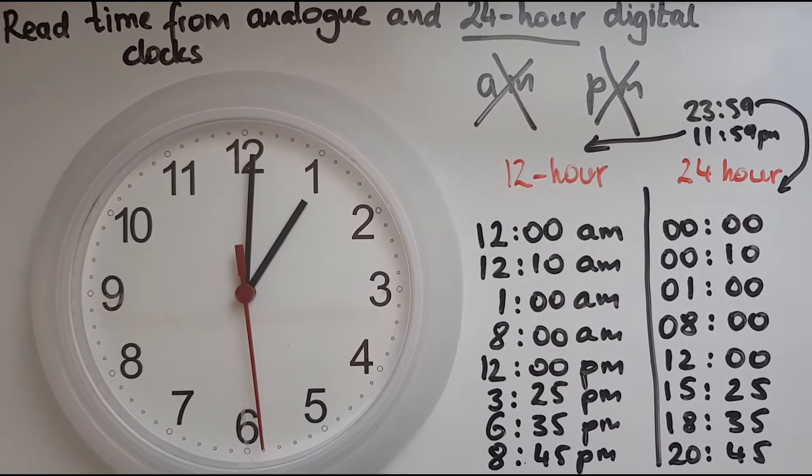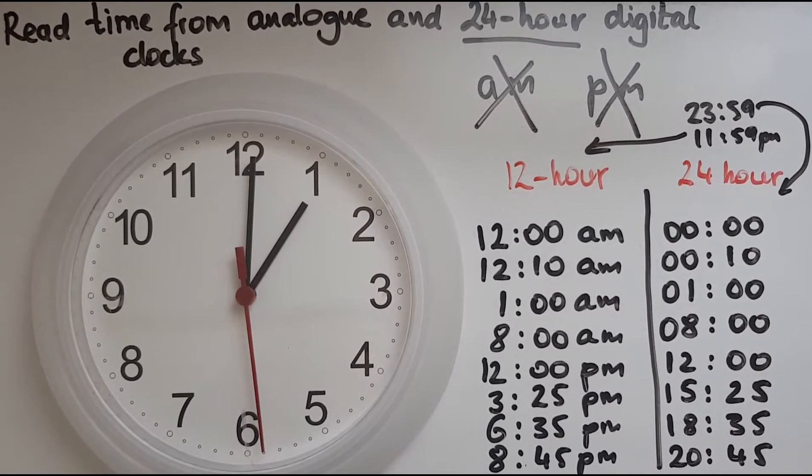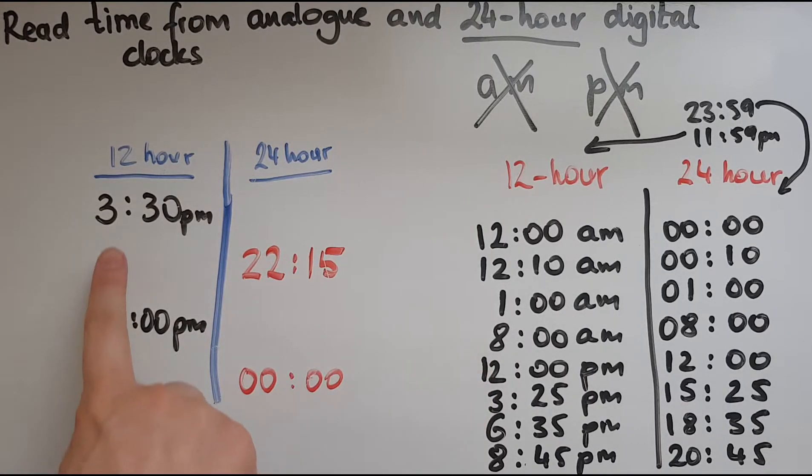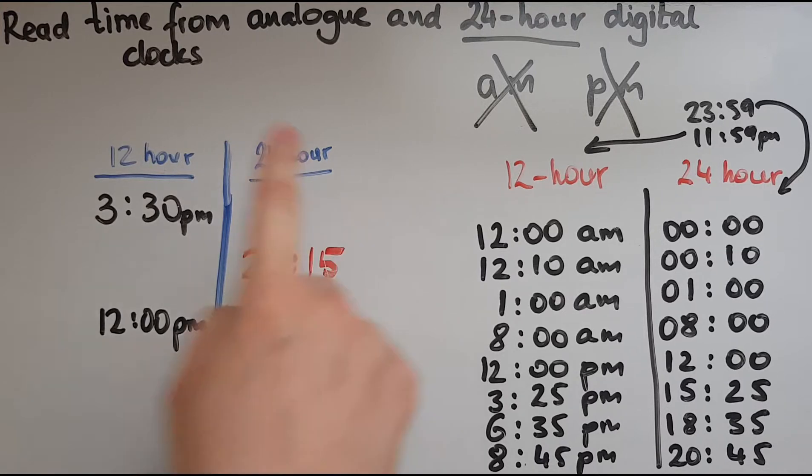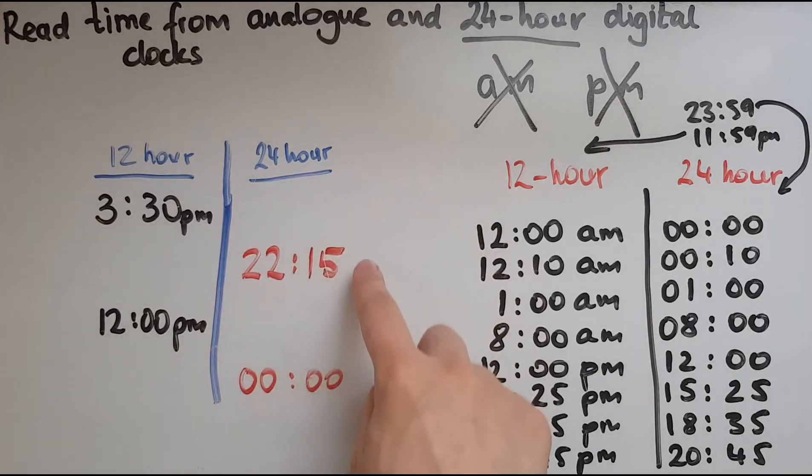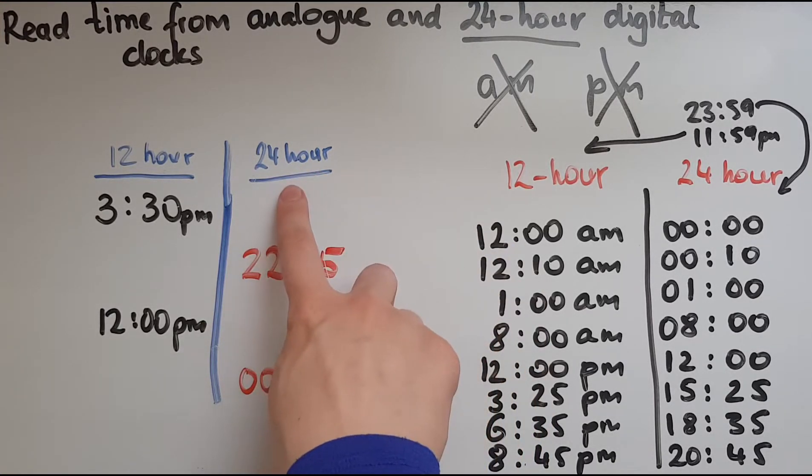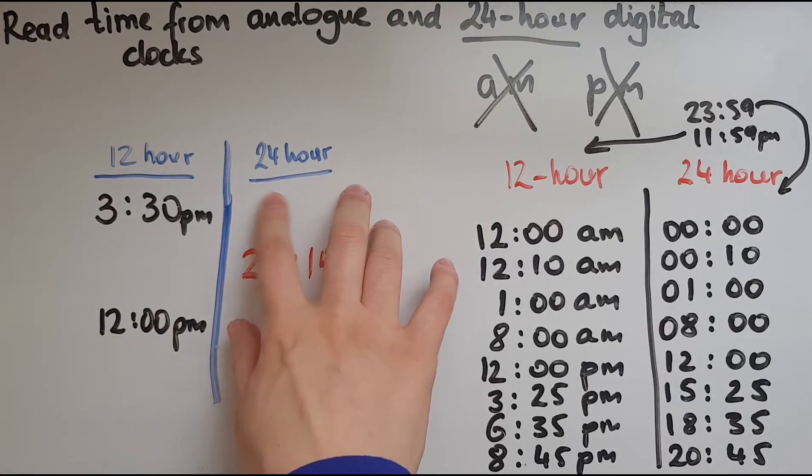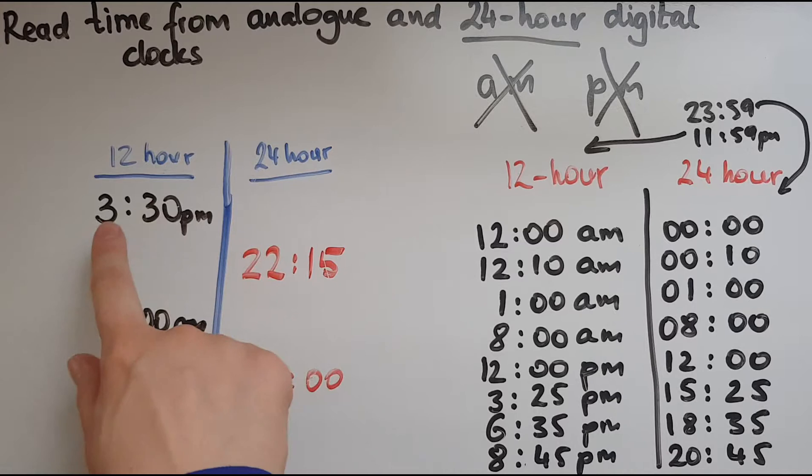Let's have a look at and give a go converting between the two different formats. So we've got the 12-hour format and the 24-hour one. We've got 3:30 p.m. We'll try and convert that to the 24-hour format. So what we said was different, we'd have no a.m. or p.m., and we would work out if it's in the afternoon we continue counting from 12. So 1 p.m. would be 13, 2 p.m. would be 14, 3 p.m. would be 15.